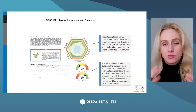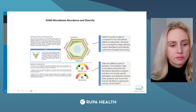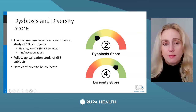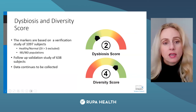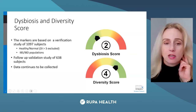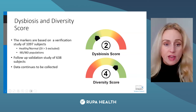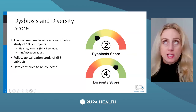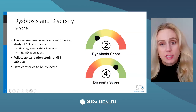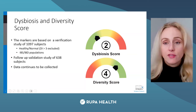You can get a lot of information from just this first section, and these are very patient-friendly teaching tools. The dysbiosis score was originally studied with over 1,000 subjects, and now I believe there are over 5,000 subjects. The data continues to be collected, and we're constantly looking at and validating it. With GI 360, you can access all of those research papers at www.gi360.com.